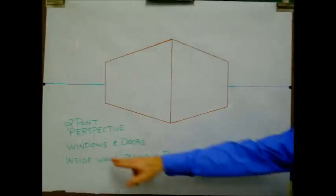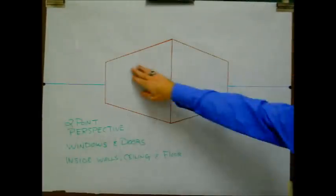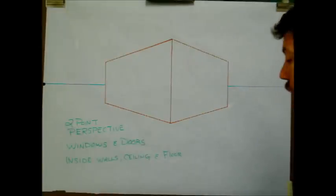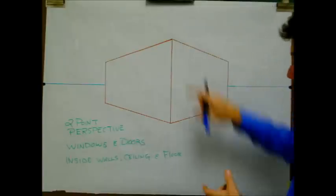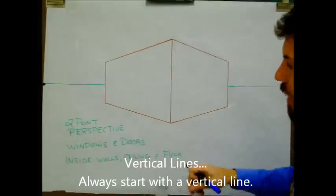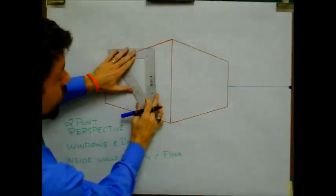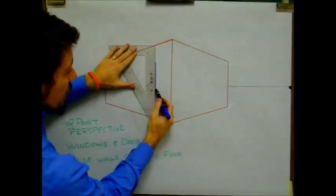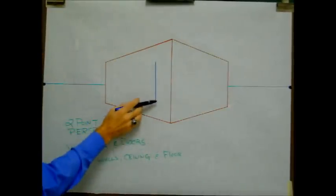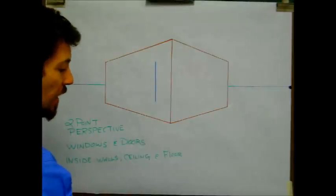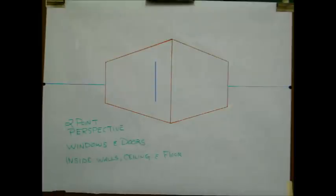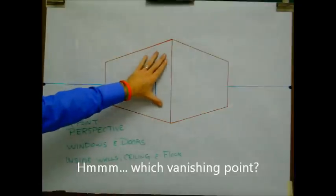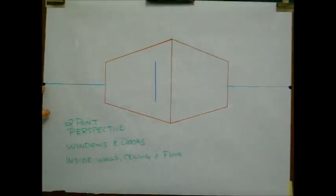The first thing we're going to do is draw a window. Rather than worrying about exactly where — up at the top or down at the bottom — we're just going to begin by putting a vertical line somewhere on the left side of your building or your cube. We're going to draw in a single vertical line. It does not touch the top, it does not touch the bottom. It's somewhere within that space. The next line is going to be a diagonal line, so it has to go to one of your vanishing points. Because it's on the left side of the building, it's going to go to your left vanishing point.